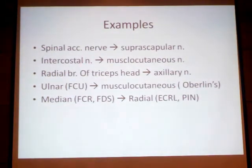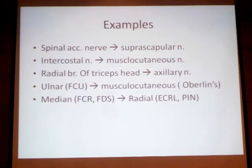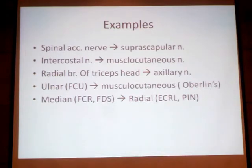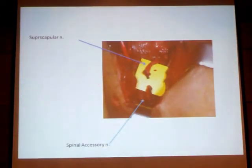Clinical examples of nerve transfers include: spinal accessory nerve to the suprascapular nerve for shoulder abduction; intercostal nerves to the musculocutaneous nerve for elbow flexion; a branch of the radial nerve — specifically to the long head of triceps — transferred to the median nerve. These are well-established, standard procedures in brachial plexus reconstruction.